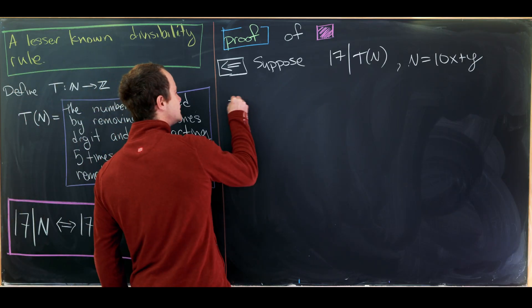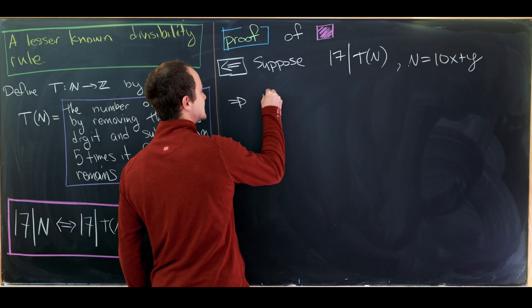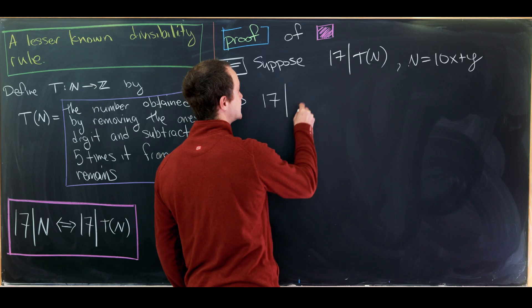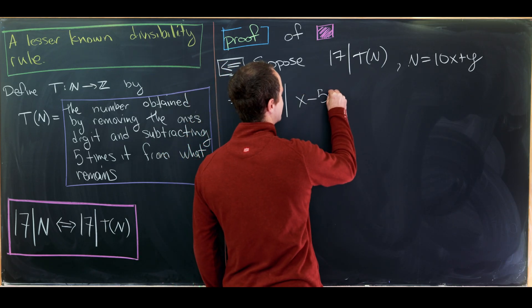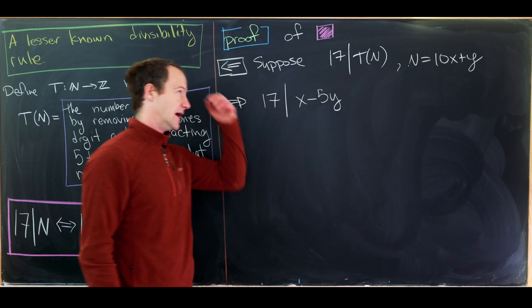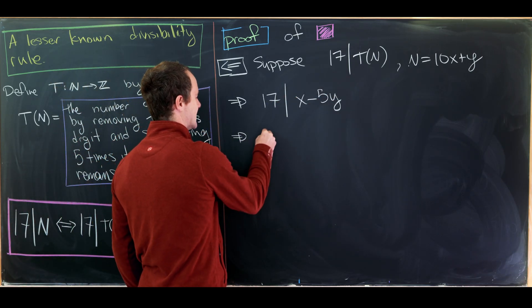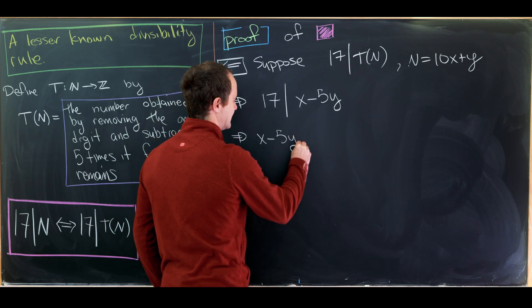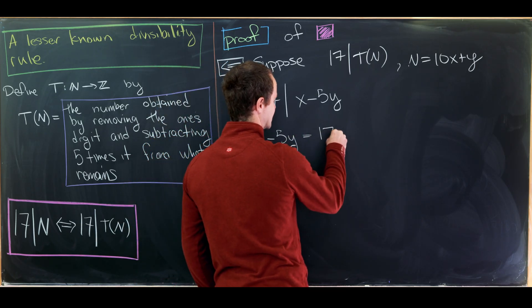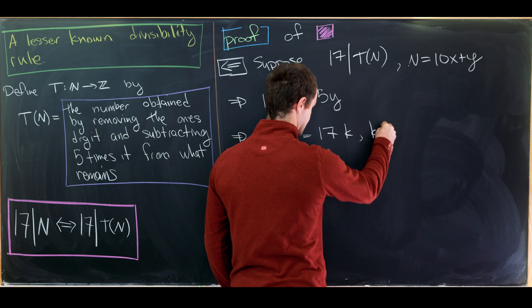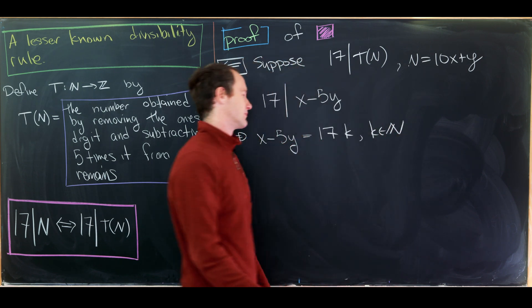So let's notice that that means that 17 divides x minus 5 times y. That's because that's exactly T(n). So that means that x minus 5 times y is equal to 17 times k for some natural number k.